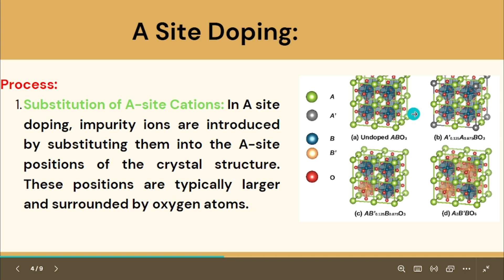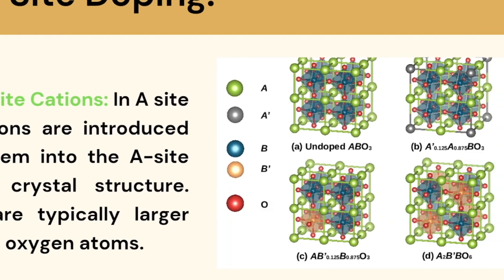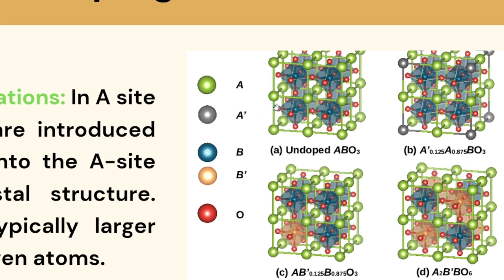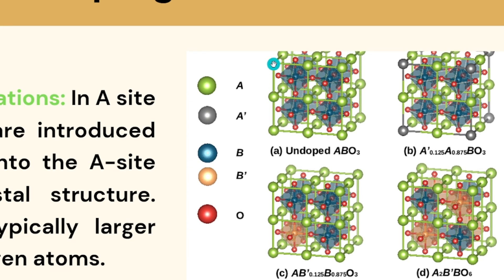Here you can see the undoped ABO3 perovskite structure. In the undoped form, each corner A atom belongs to the pure compound. In the next step, when we dope it with impurities, this atom is replaced. So we substitute A by A-prime — the dopant atom replaces the original A-site atom at specific corner positions of the unit cell.